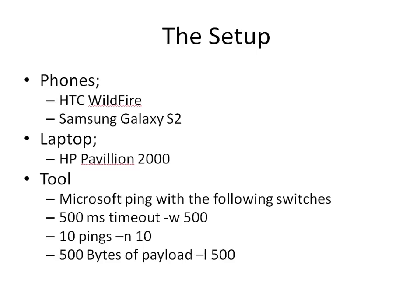For tools, we're going to use Microsoft ping with the following switches: a 500 millisecond timeout (dash W), send 10 pings (dash N 10), and 500 bytes of payload (dash L 500). The timeout matters because if it takes longer than 500 milliseconds you might as well not count it. 10 pings is better than 3 or 4, and 500 bytes gives more payload than the typical tiny default packet.